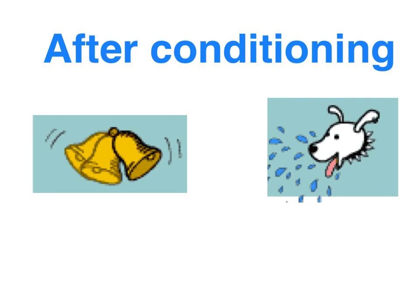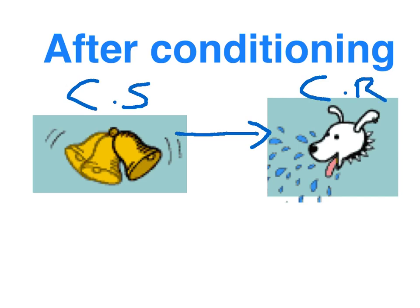After seven pairings of the neutral stimulus with the unconditioned stimulus — the sound of the bell with the meat — Pavlov could now present the bell on its own, and it would reflexively evoke a response: the salivation reflex. So now, the sound of the bell is the conditioned stimulus, and the salivation reflex in anticipation of the food is the conditioned response.